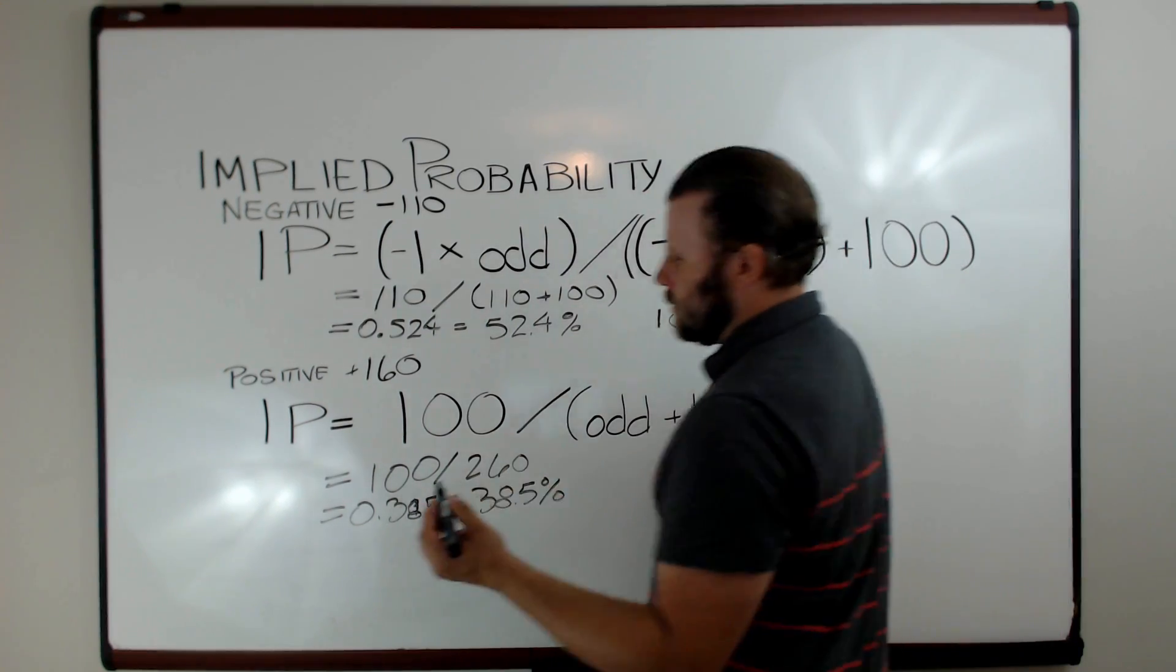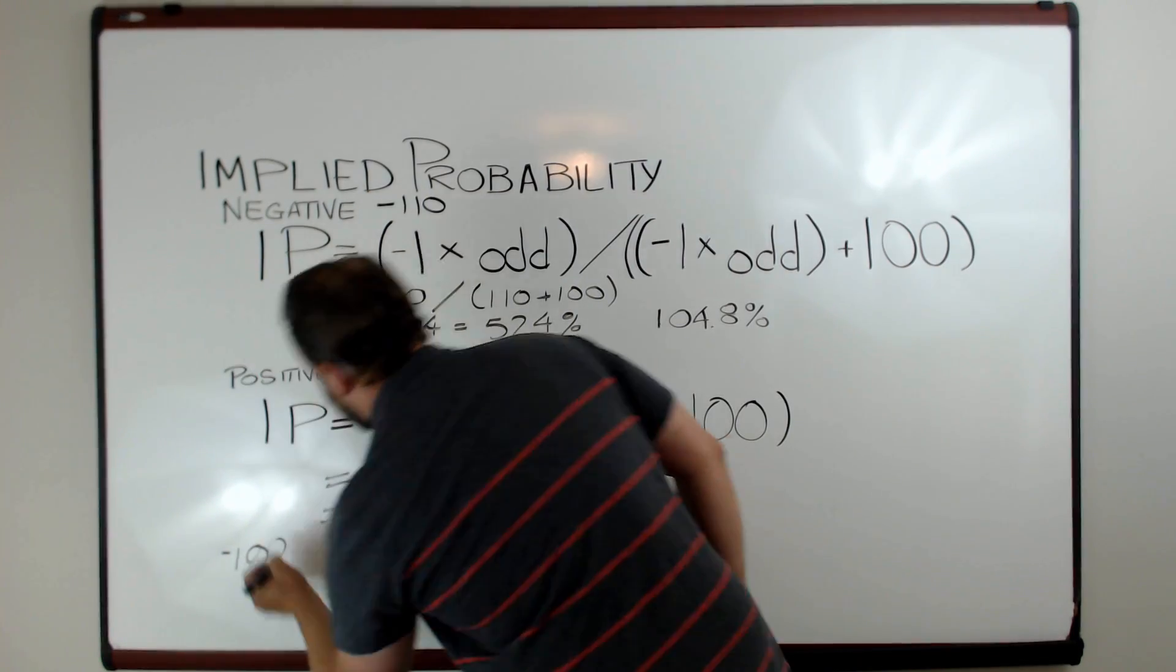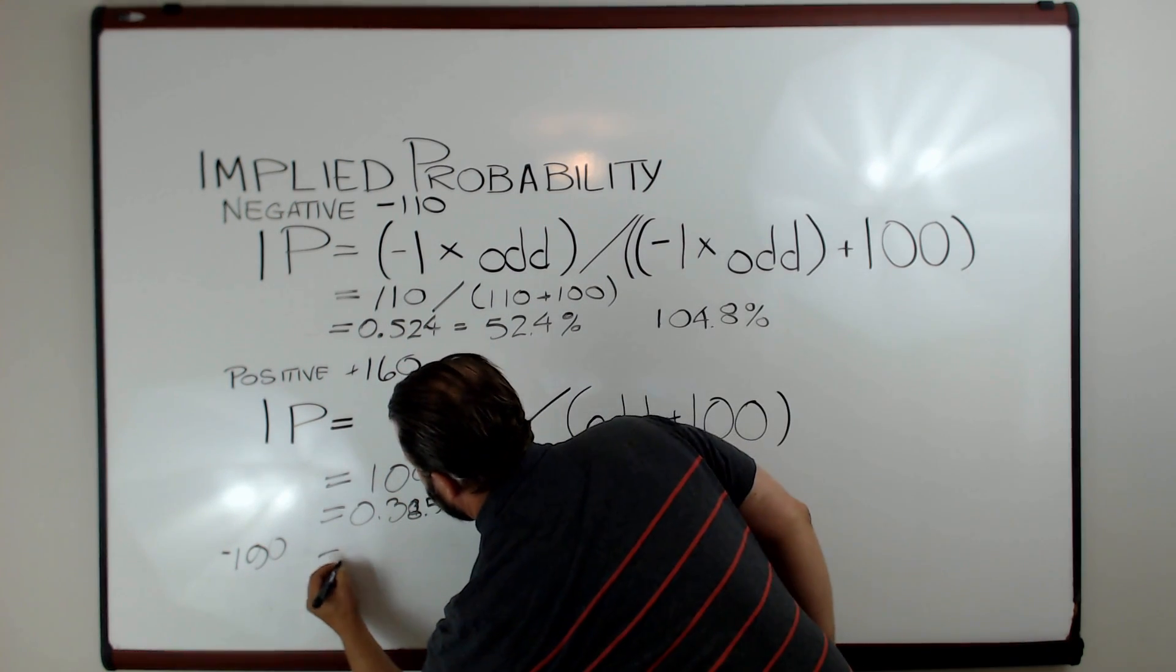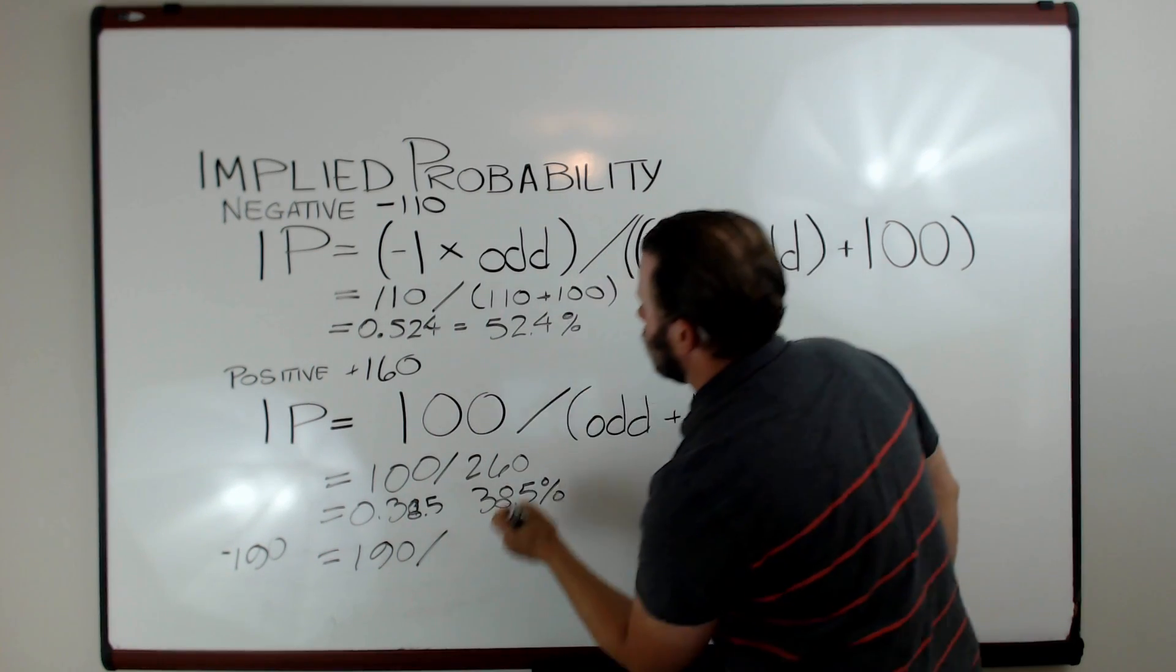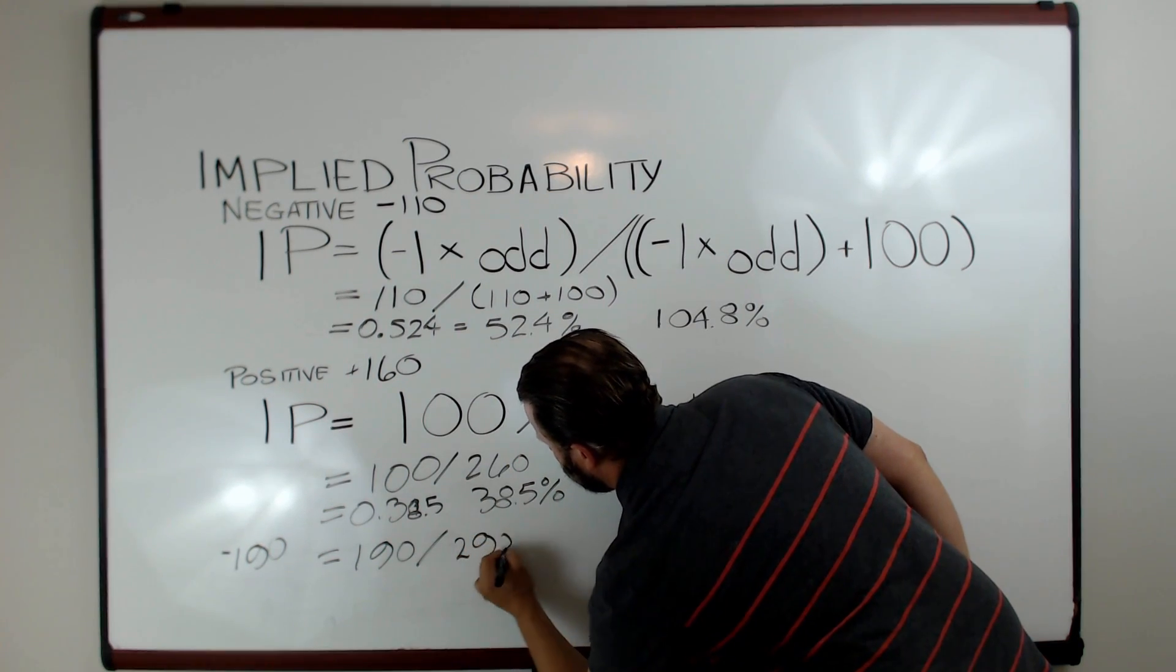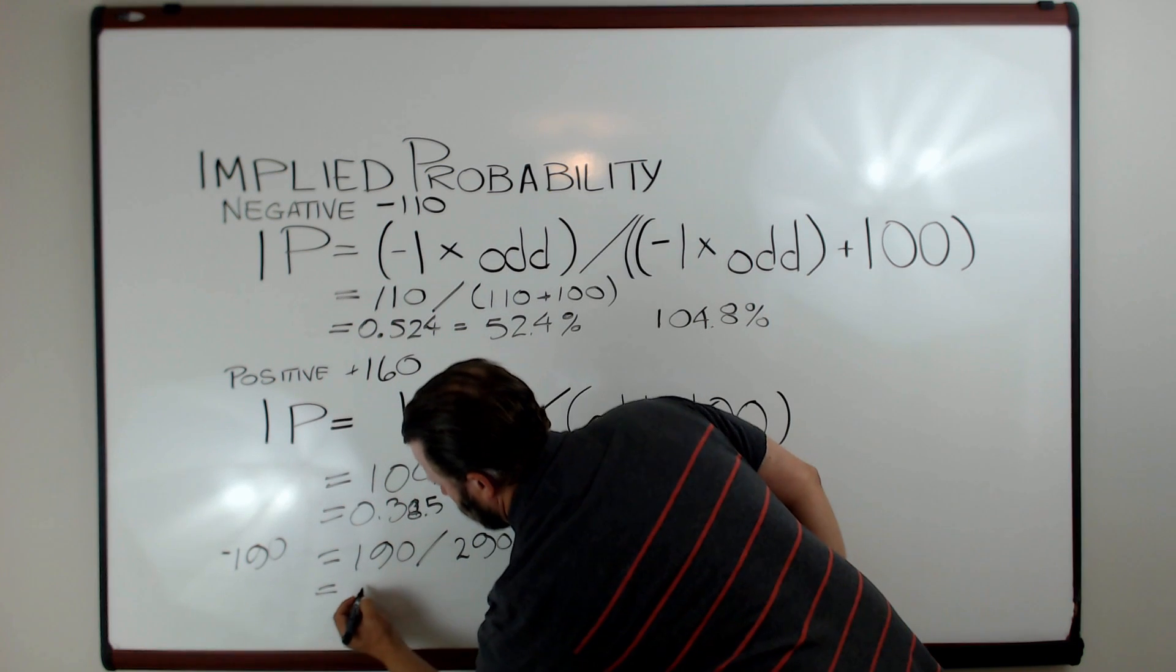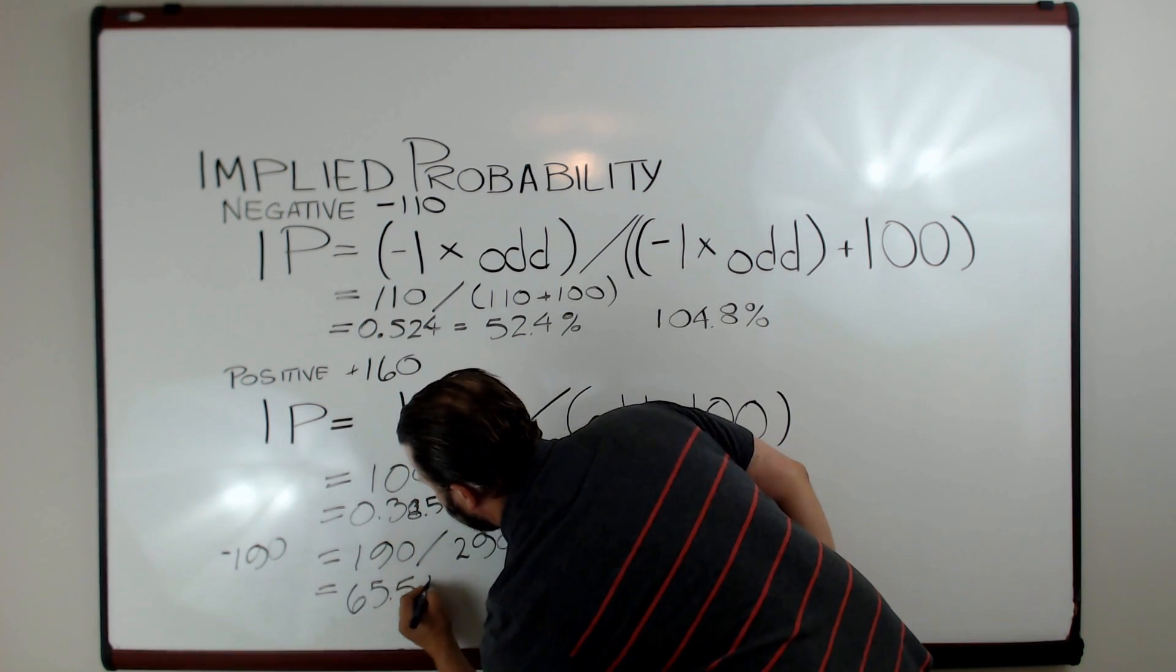Now, let's quickly do the negative odd, the negative 190. We have to use our equation up here, which is going to give us 190 over 190 plus 100, which is 290, and that's going to give us 65.5 percent.